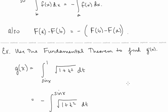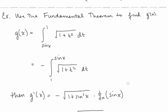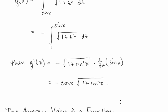Now let's use the fundamental theorem to find g′(x) when we have a constant on top and a function of x on the bottom. We need the constant on the bottom, so we rewrite the integral as negative of the integral from 1 to sin(x). Then we apply the fundamental theorem by plugging sin(x) in for t and multiplying by the derivative of sin(x), giving us the result.